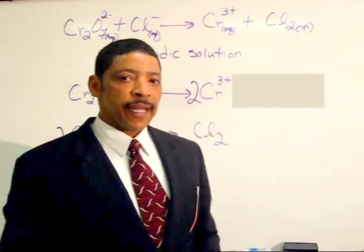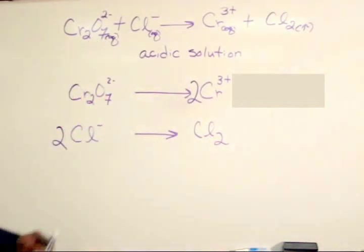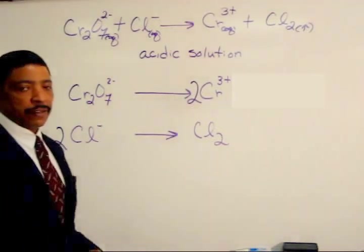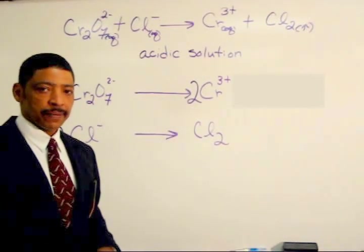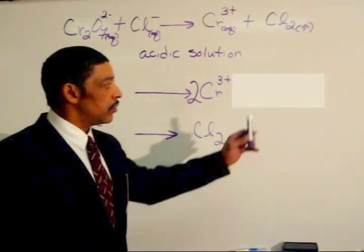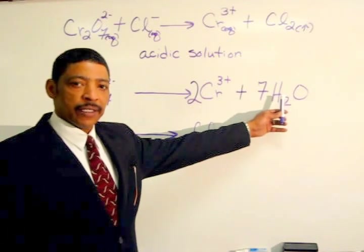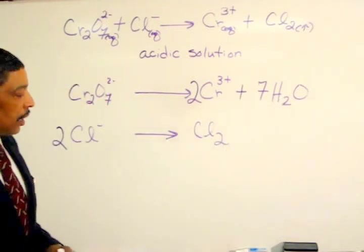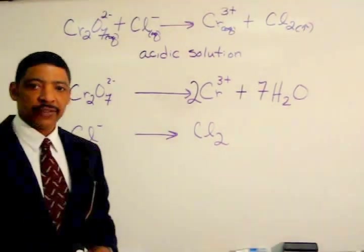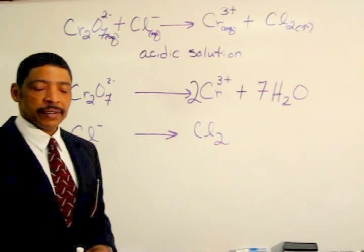The next step is to balance the oxygens in each half reaction. In the first half reaction, dichromate ion contains seven oxygen atoms. To balance the oxygens, I will simply add seven water molecules to the right side of the equation. Of course, in the second half reaction, no water is necessary since there are no oxygen atoms to balance.